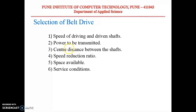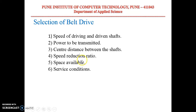Now, what are the factors we have to consider while selecting a belt drive? The first factor is the speed of the driving and driven shaft — what speed you have to achieve, whether it is a reduction ratio, and what kind of velocity ratio is required. Also consider how much power is to be transmitted, the center distance between the shafts, speed reduction ratio, space available, and service conditions.